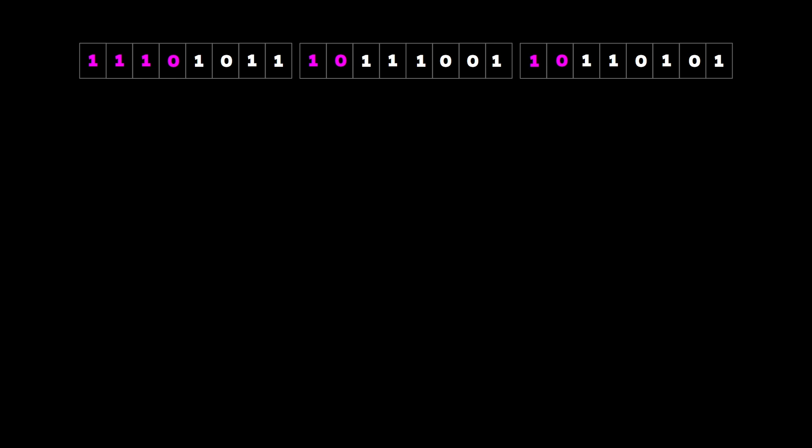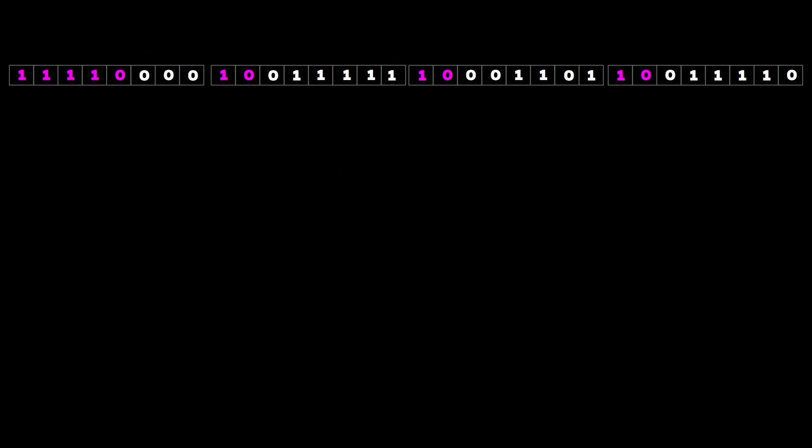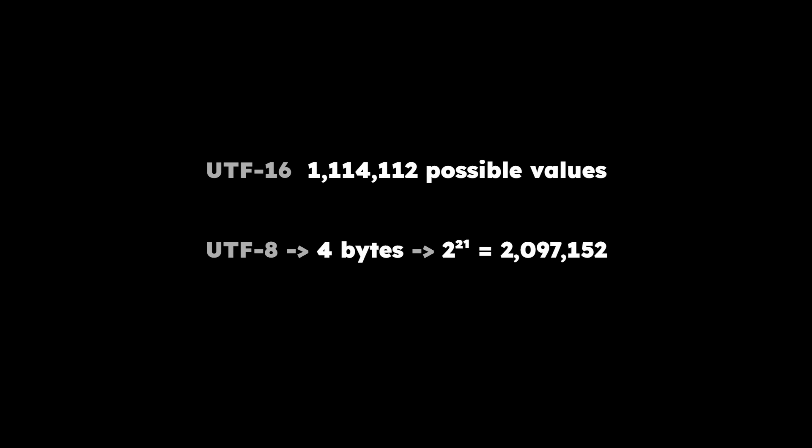If the first byte starts with 1110, the character is encoded on 3 bytes, and the following 2 bytes must start with 10. The remaining 16 bits encode the character — for example, 0xBE75, the Korean syllable for bread. Continuing the pattern, if the first byte starts with 11110, 4 bytes are used, with the 3 following bytes starting with 10. The rest of the bits encode the character — in this example, the bread emoji. Because of UTF-16's limit of 1.1 million values, UTF-8 only needs 4 bytes to encode all possible Unicode values.